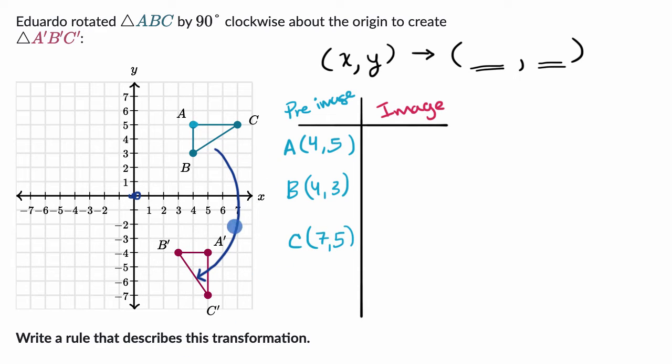Now what happens to these once they get rotated? So the corresponding point on the image to A, A prime, that is at the point five comma negative four. B prime is at three negative four. And then C prime is at five negative seven.